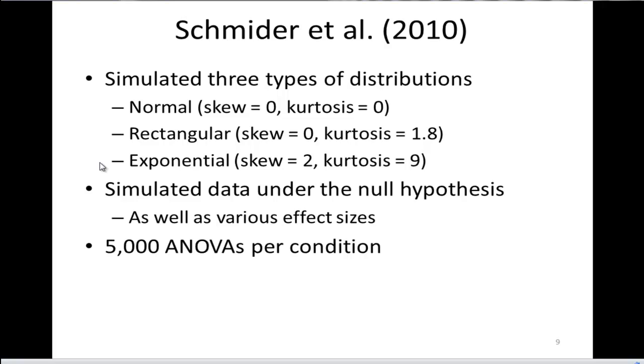They conducted 5,000 ANOVAs per condition. From those 5,000 ANOVAs they estimated the percentage of ANOVAs that were statistically significant. In the null hypothesis simulated data, technically there shouldn't be any ANOVAs that are statistically significant. But when we specify alpha 0.05, we expect that there will be 5% that will be significant. They simulated the data where group sizes were equal to 25, which is a pretty standard sample size in practice.